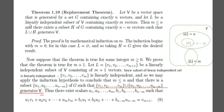Let us start with the Replacement Theorem. Let V be a vector space generated by a set G containing exactly n vectors, and let L be a linearly independent subset of V containing exactly m vectors. Then m is less than or equal to n, and there exists a subset H of G containing exactly n minus m vectors such that L union H generates V.